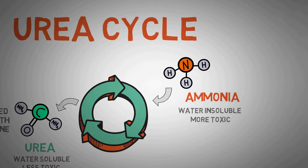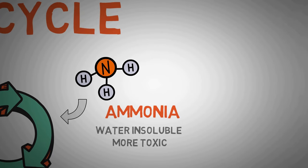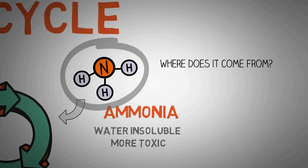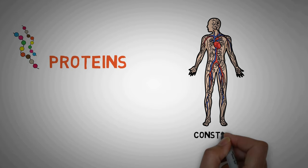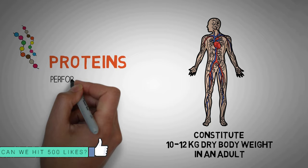Before diving into how this ammonia is converted into urea, it is very important for you to understand where does this ammonia come from and how is it transported to the liver for the urea cycle. Proteins are the most abundant organic compounds and constitute a major part of the dry body weight, approximately 10-12 kg in an adult.